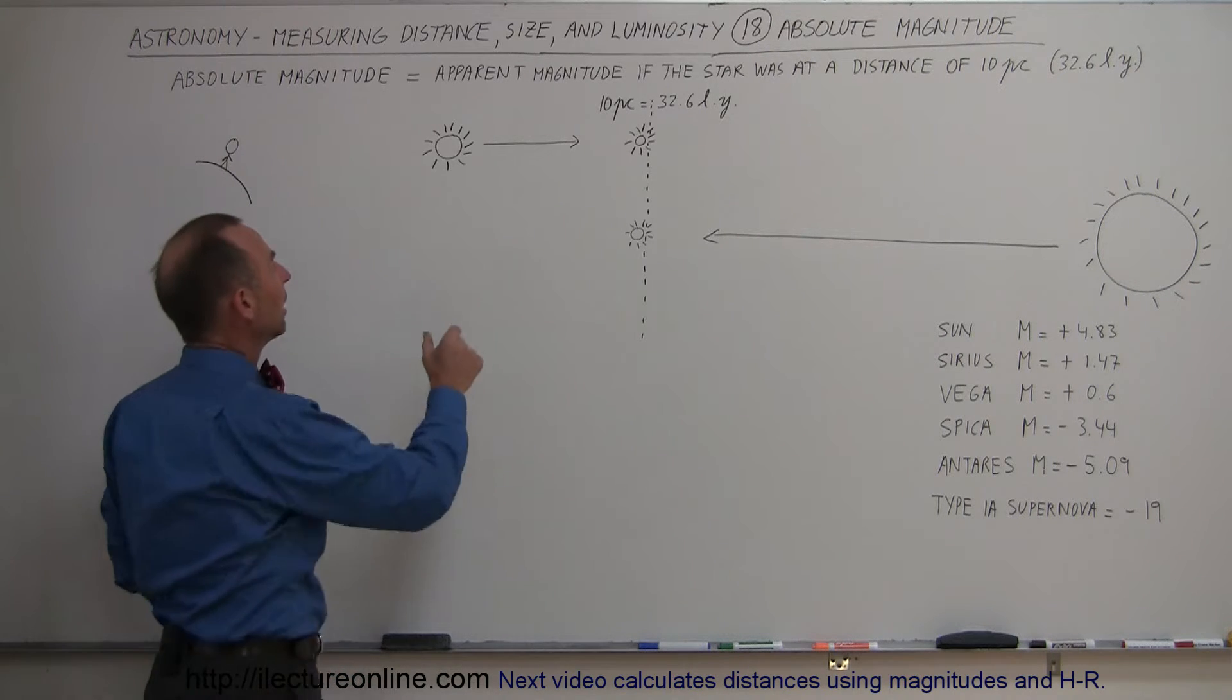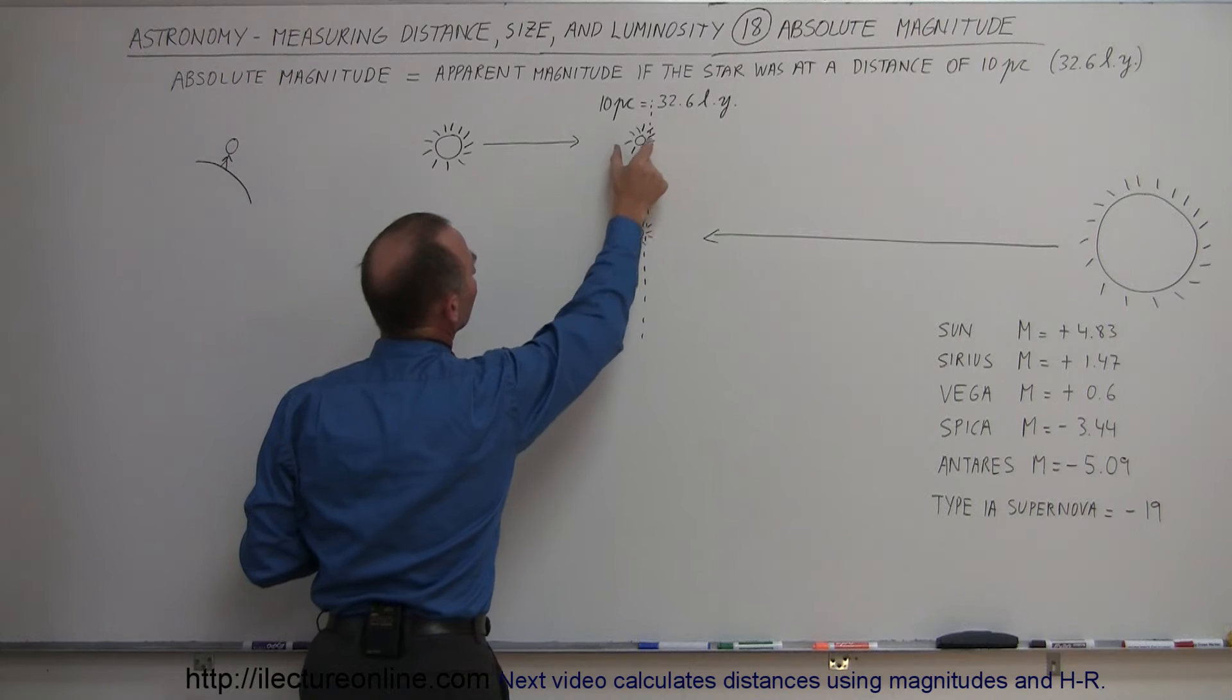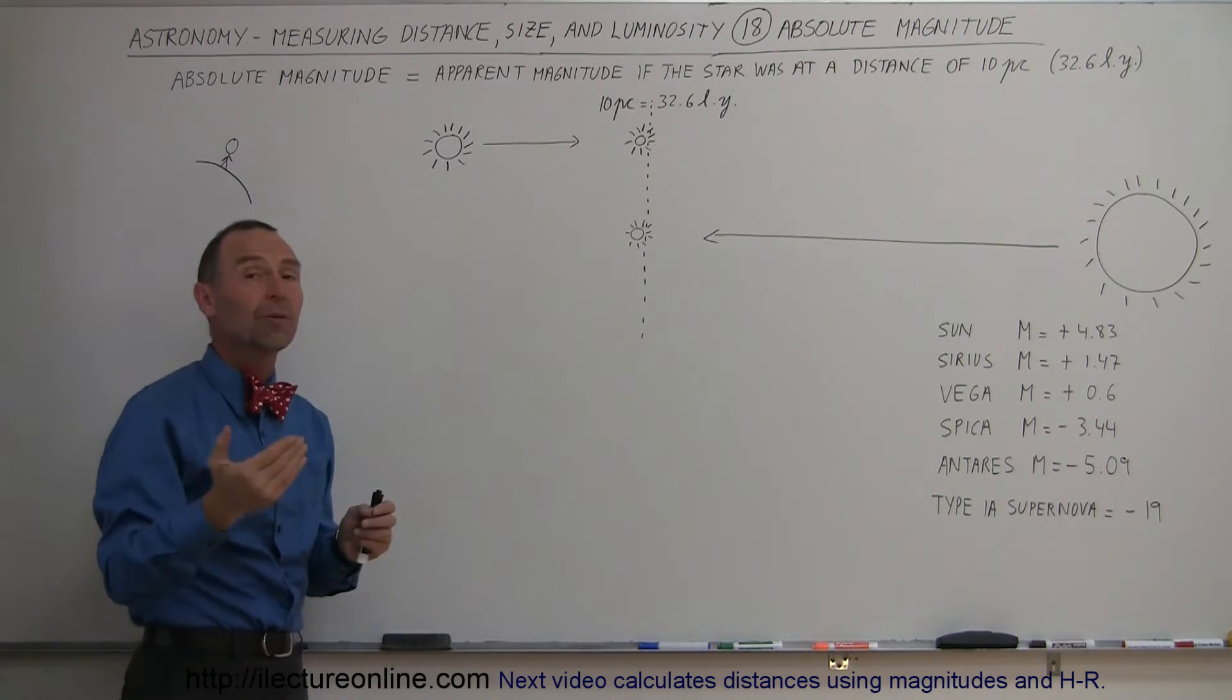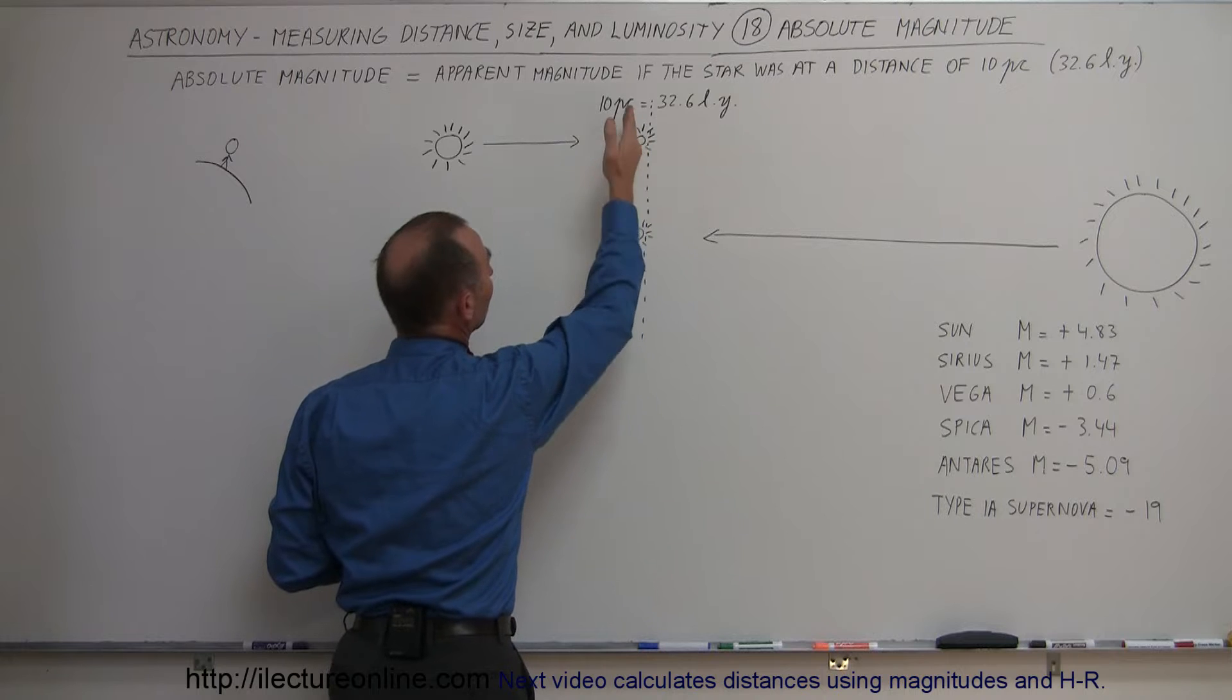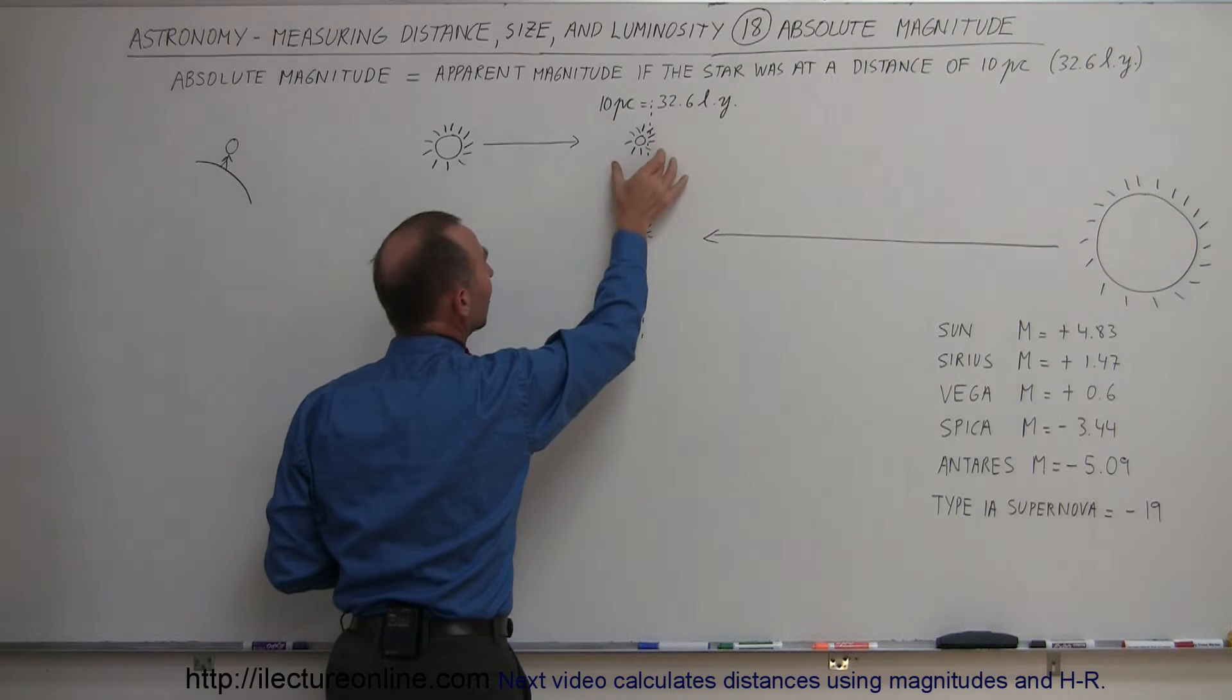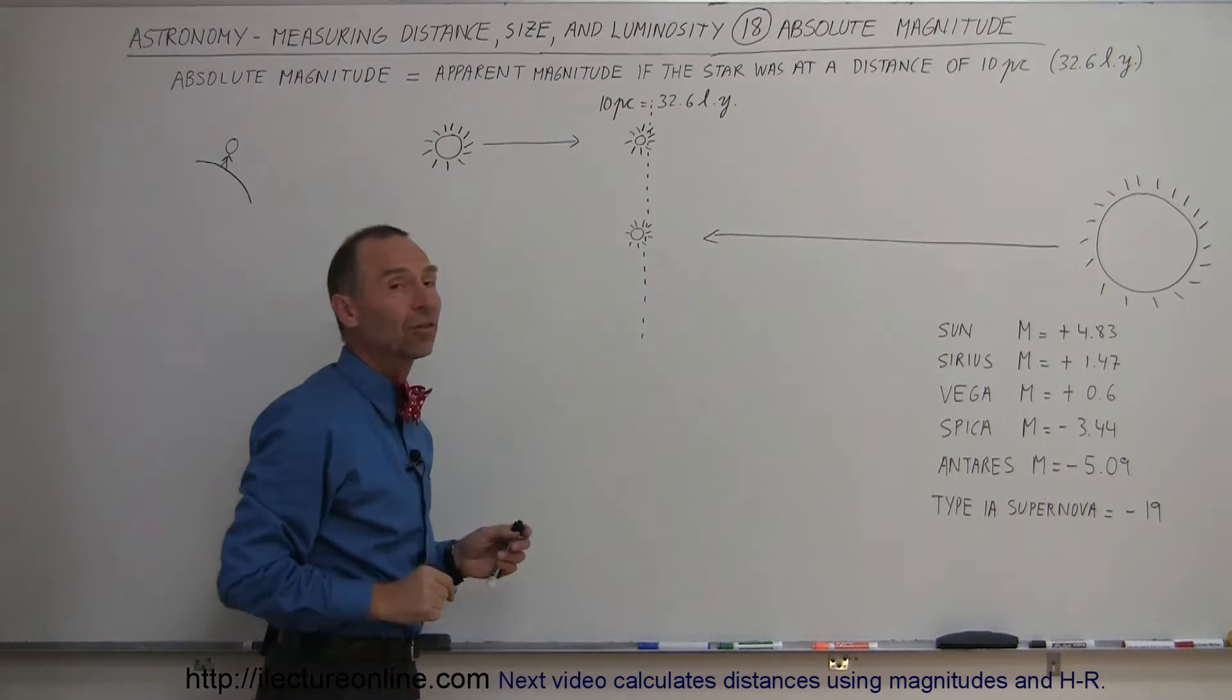Now, what would happen if we take that star and we move it farther away? Well, the apparent brightness would, of course, diminish. Whatever the apparent brightness is, by the time we reach the distance of 10 parsecs, that then becomes the absolute brightness of that star.